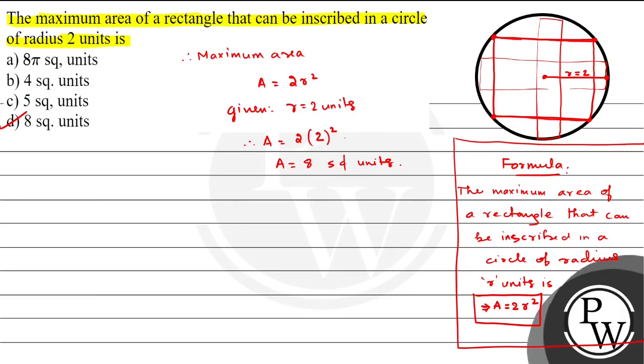Looking at the options, option D, 8 square units, is the correct choice for this question. I hope students understood the solution to this question in this video. Thank you students.